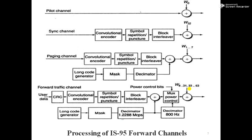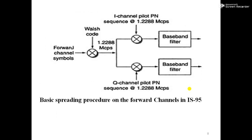All forward logical channels use the same bandwidth. The Walsh code distinguishes among different channels using 64 orthogonal 64-bit codes derived from a 64×64 Walsh matrix. Power control information is transferred from the cell side to the mobile user by multiplexing power control bits with the traffic bits at a rate of 800 Hz. Signals from each forward logical channel — pilot, synchronization, paging, and traffic — are modulo-2 added to I and Q PN short-code sequences, and the spread signals are baseband filtered.